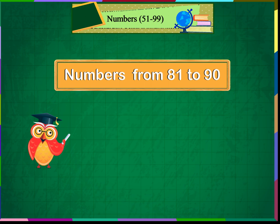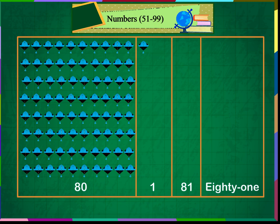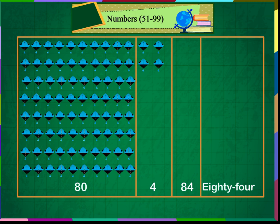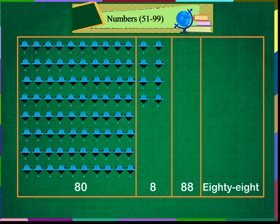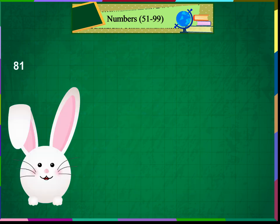Numbers from 81 to 90. 80 and 1 makes 81. 80 and 2 makes 82. 80 and 3 makes 83. 80 and 4 makes 84. 80 and 5 makes 85. 80 and 6 makes 86. 80 and 7 makes 87. 80 and 8 makes 88. 80 and 9 makes 89. 80 and 10 makes 90. 81,